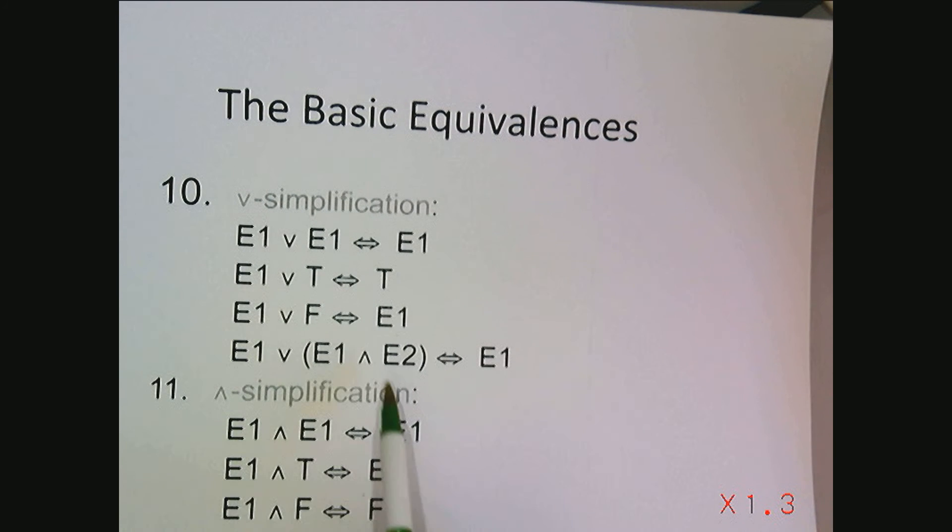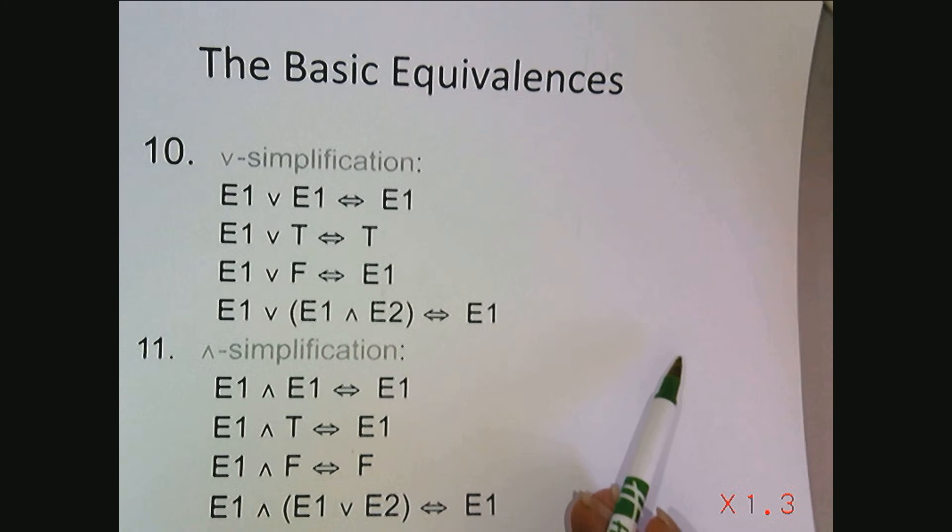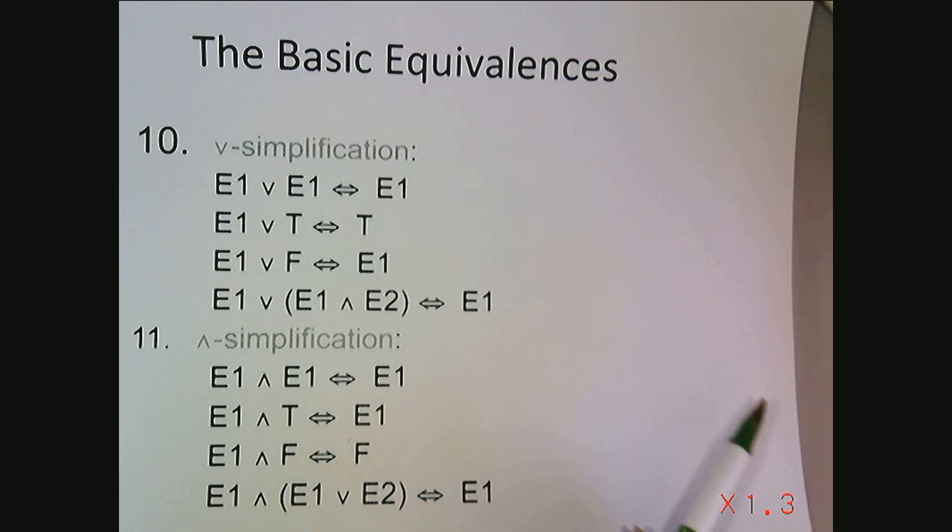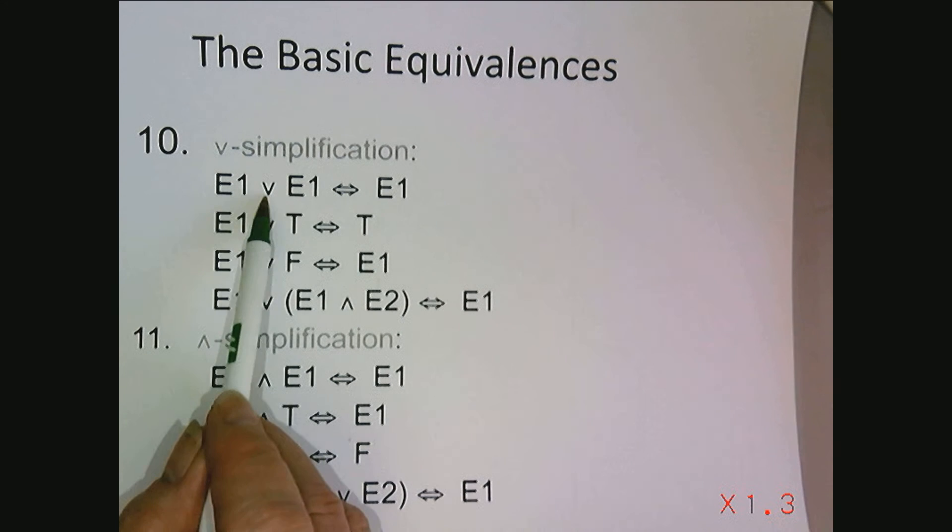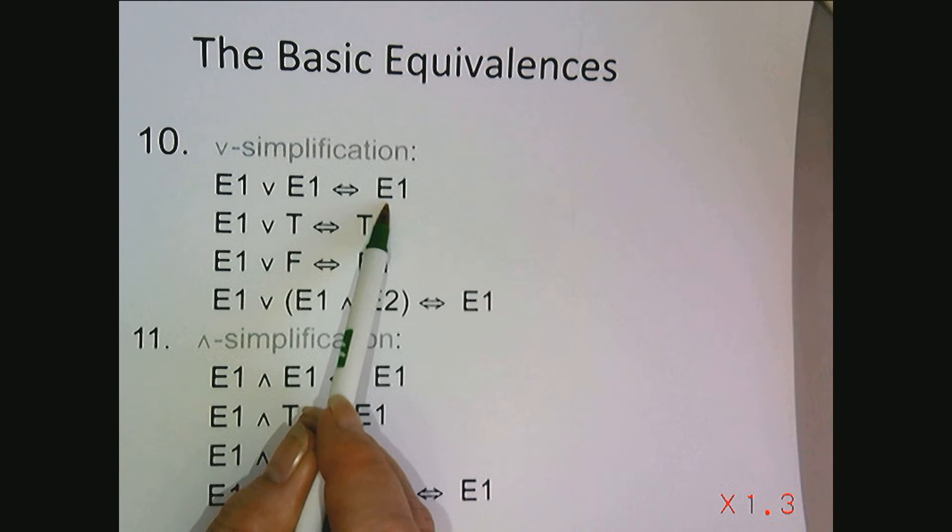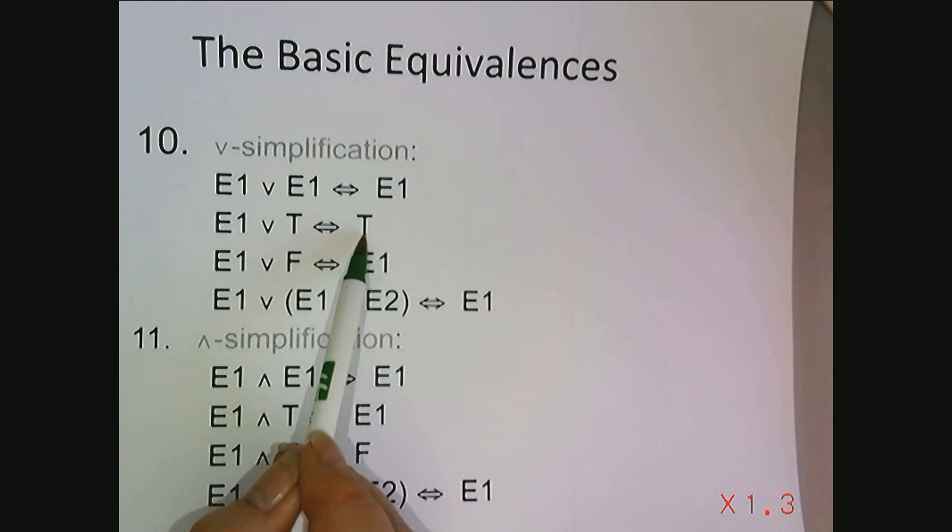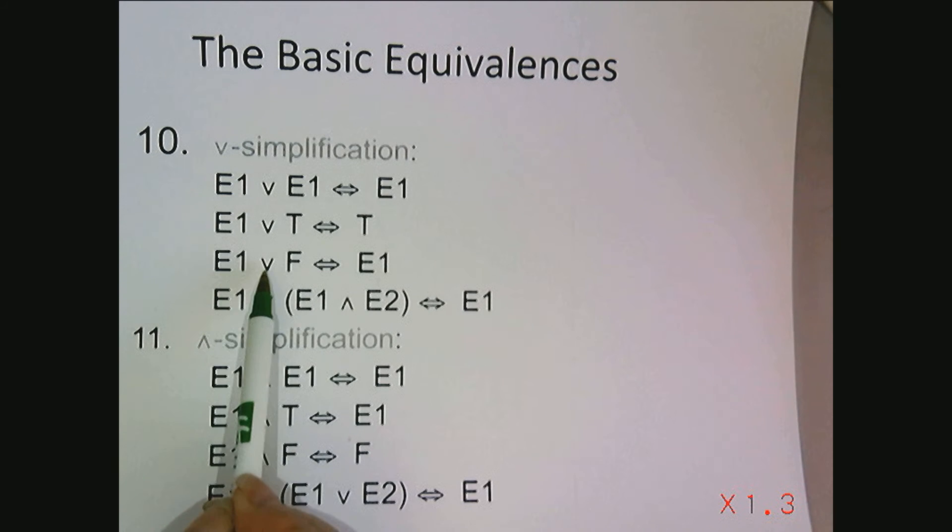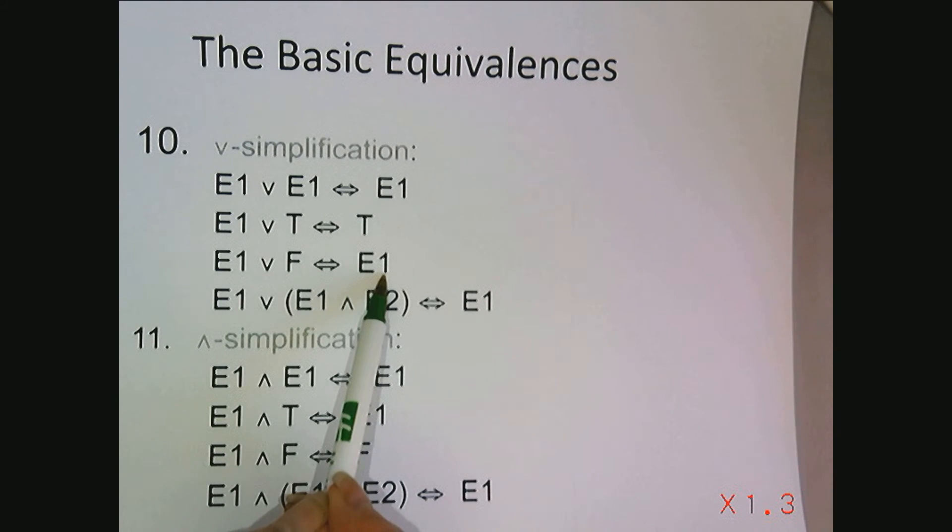Other basic equivalences that we're going to be running into often are or simplification and and simplification. E1 or E1 is equivalent to E1, E1 or true is equivalent to true, E1 or false is equivalent to E1, and E1 or E1 and E2 is equivalent to E1. This helps us simplify.